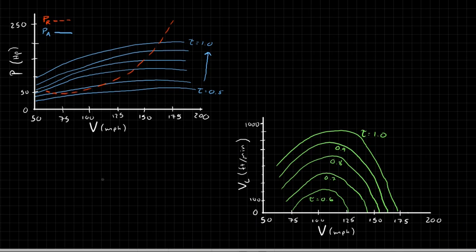Let's talk about the power available. The power available generally comes from experiment and is given by the maker of the engine or power plant. There are some general trends that are important to know. Up here on the top left, we have a plot for a typical general aviation aircraft of the power available and the power required as a function of airspeed. Notice that the power available changes depending on your throttle setting.